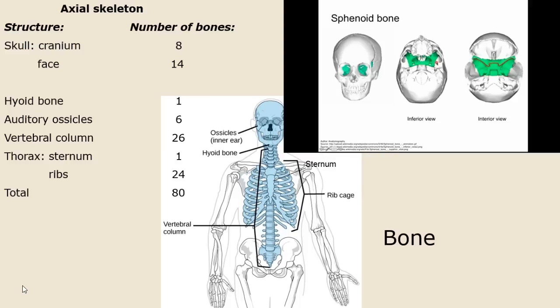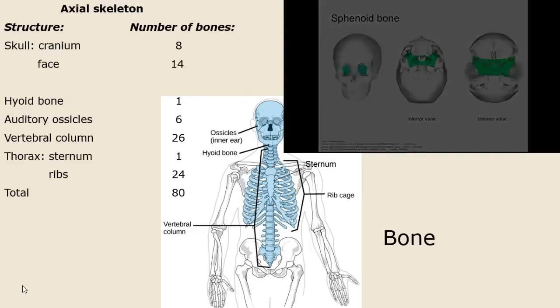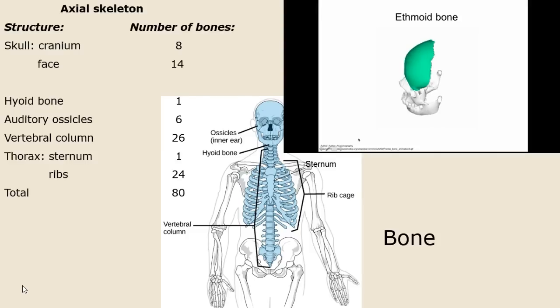In the middle is the sella turcica — 'turkey saddle.' It looks like a saddle when you hold the skull in your hand and look down on it. Here we have a little rotation so you can see it from the temporal region as well.